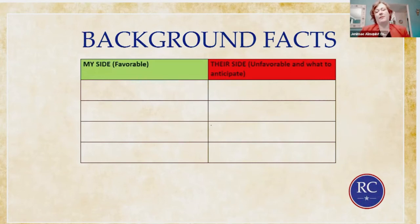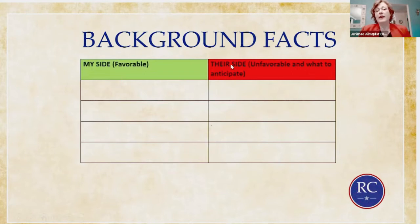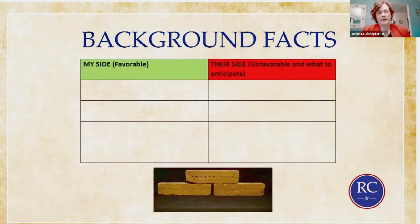So how do you start thinking about presenting these facts to a jury? Take a piece of paper and draw a line right down the middle. On one side, put your side — shown here in green. On the other side, put the opposing side, the things that are unfavorable to you, things that could hurt your case. Make a list of every single thing you know about each witness that is important to present to the jury. Remember, these are the bricks — these facts are going to build the whole story little by little for the jury.